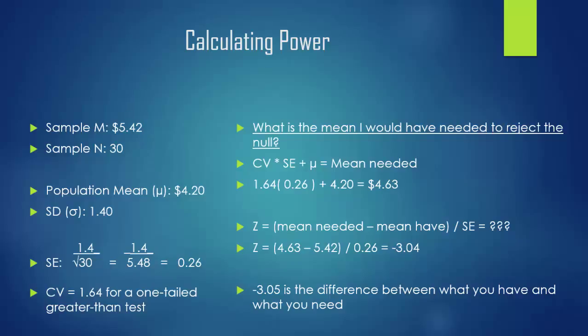Your next step is going to calculate a z-score of the mean needed minus the mean that you have. The mean needed was 4.63, and then the mean that we had was 5.42. And you divide all of that by 0.26, which is the standard error. That gives us a number of negative 3.04.